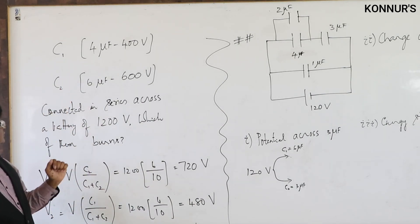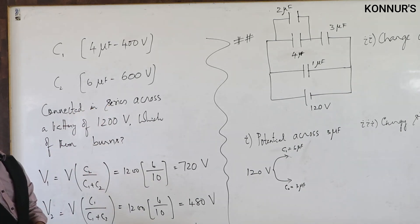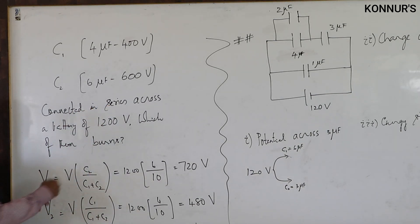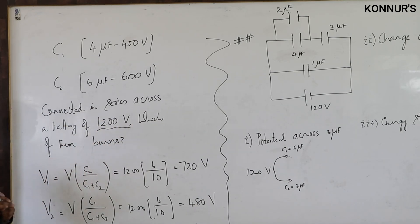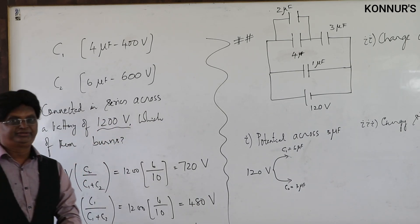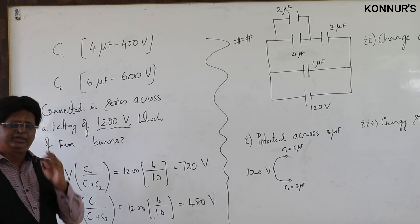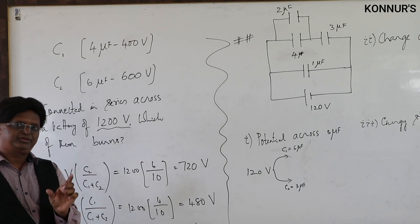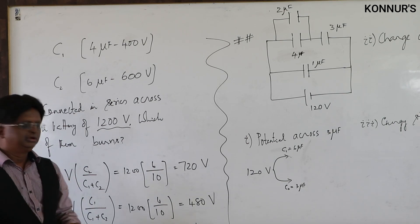C1 and C2 with their ratings are connected in series across a battery of 1200 volts. The question is: which of them burns? This is essentially a case of dividing potential between two capacitors in series.